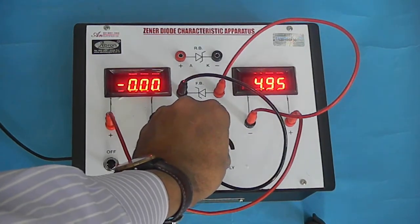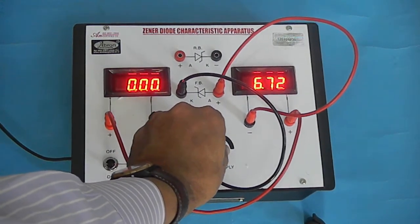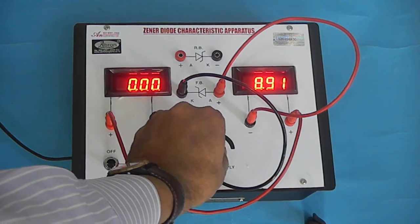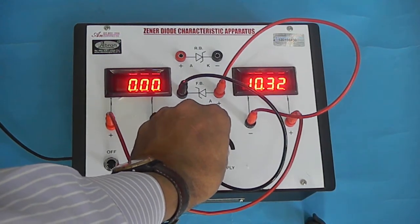With a minor increase in the voltage, you can see there is no voltage change in the meter, but there is a huge current passing in the Zener.